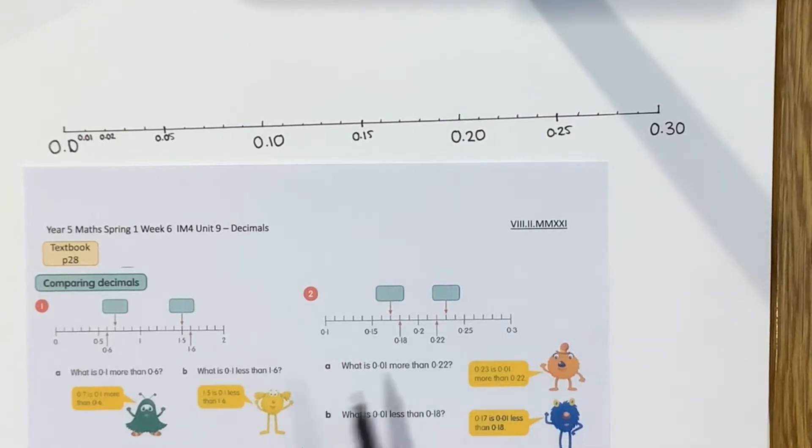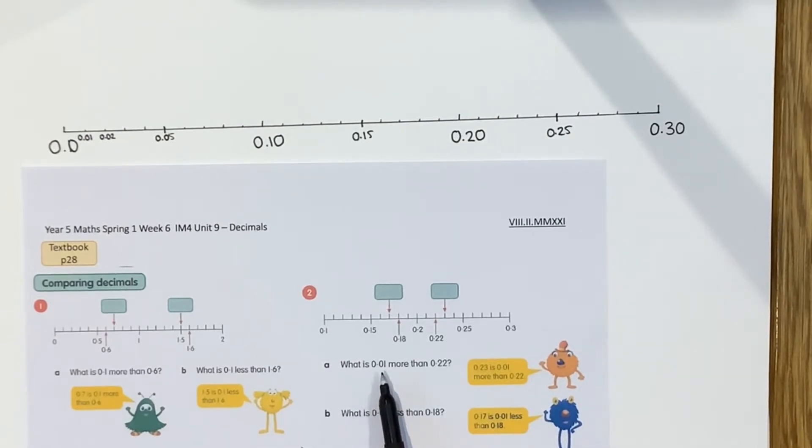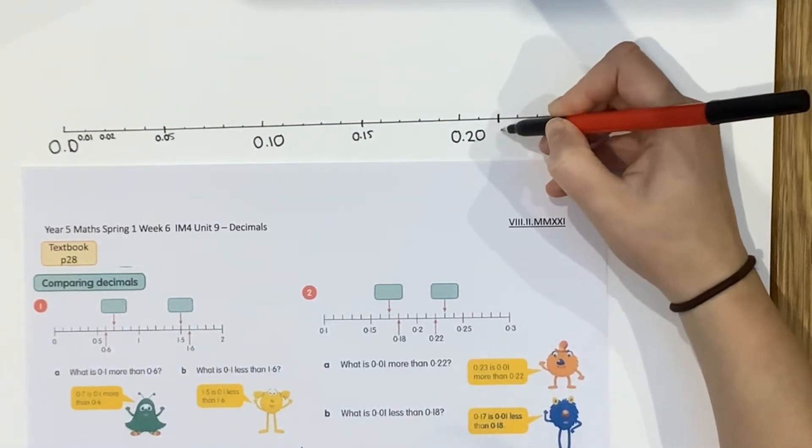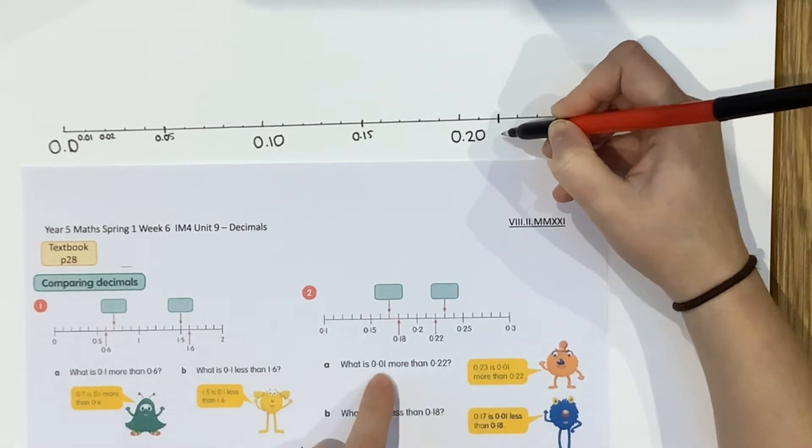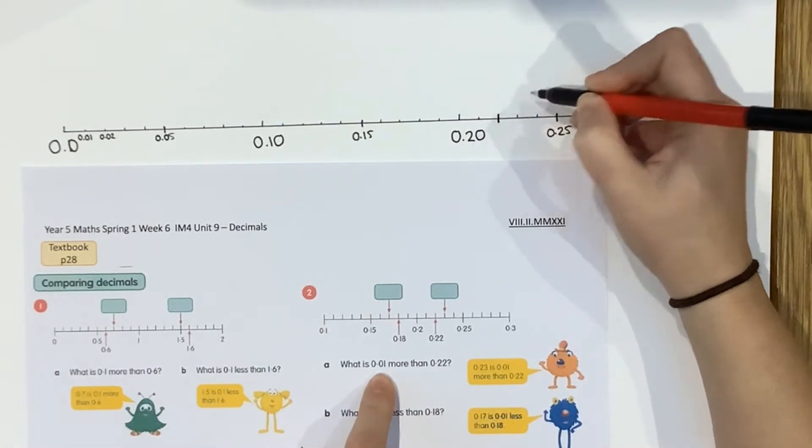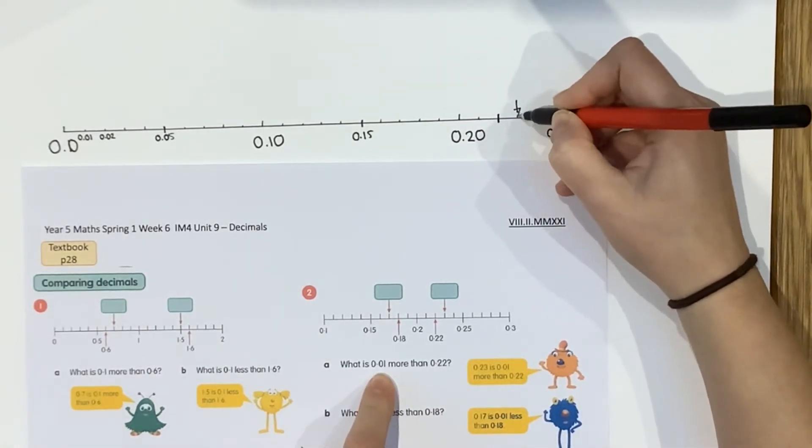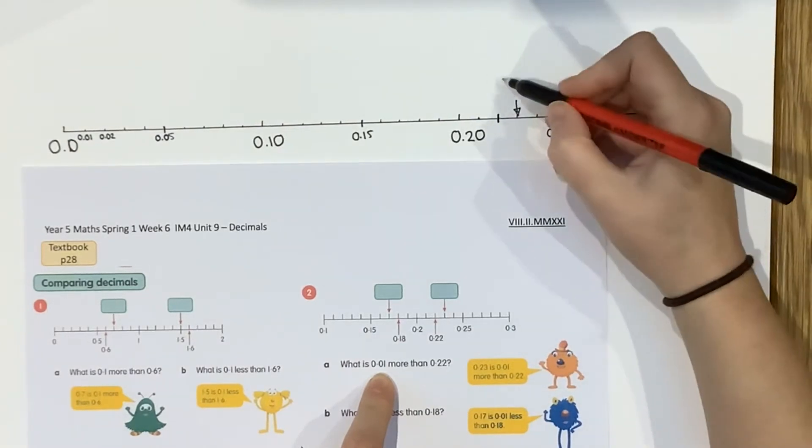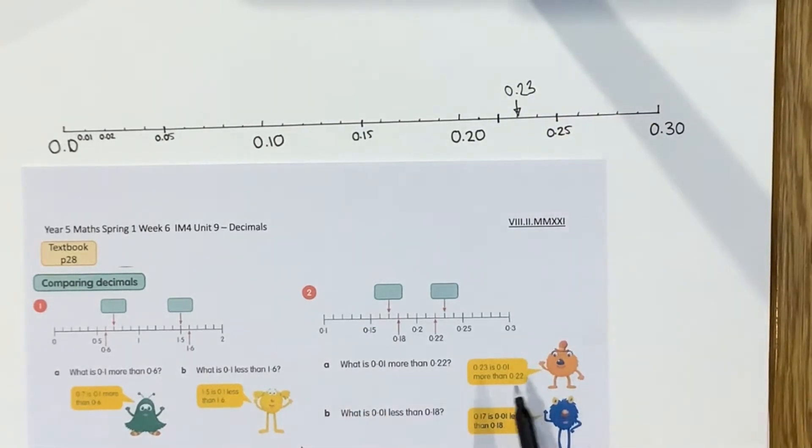It doesn't mean anything, it doesn't add anything to the number, but it just means, hopefully, you can see the pattern moving on. So that's 0.10. This is going to be 0.15. This is going to be 0.25. Okay, you don't need this zero, but if it helps you to see the patterns between the numbers, then absolutely, you can use it. Okay, back to the question then. What is 0.01 more than 0.22?